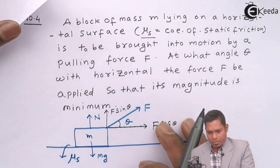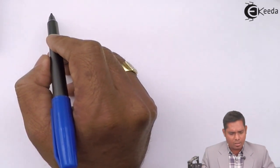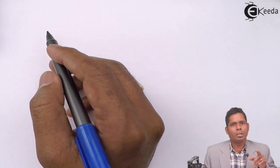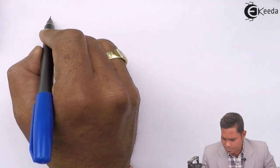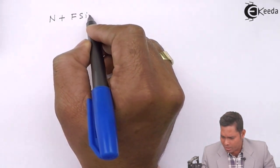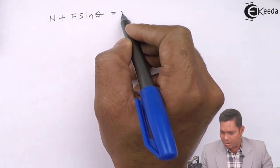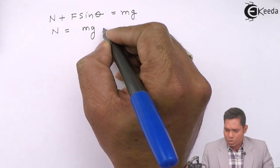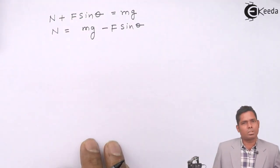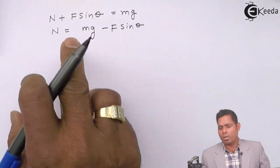Since the block moves only horizontally, there is no vertical movement. So I balance the upward and downward forces. The upward forces are the normal force N and the vertical component of the applied force F sinθ, and these must balance the weight of the block mg. So: N + F sinθ = mg, which gives N = mg − F sinθ.